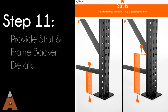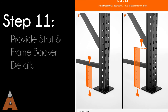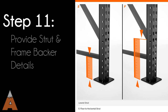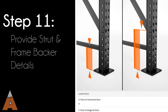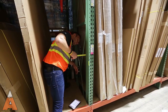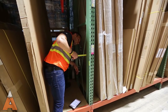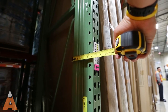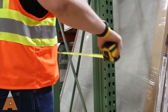Details regarding the upright struts and backers are next. First, measure from the floor to the first horizontal strut and from the floor to the first diagonal strut. If your upright has seismic backers, you will be prompted to provide the depth and width for both front and rear backers. Now, select the type of strut and measurements. The app will guide you through your selection.